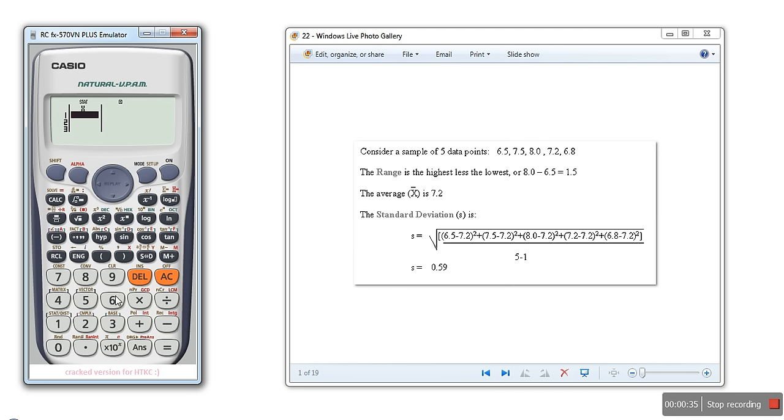We have this data, so we will enter 6.5, then 7.5, then 8, then 7.2, and finally 6.8. Once the data entry is done, press the AC key to save your data in memory.